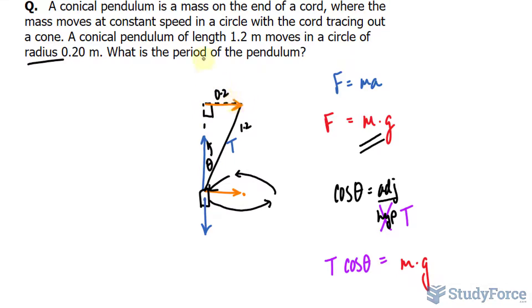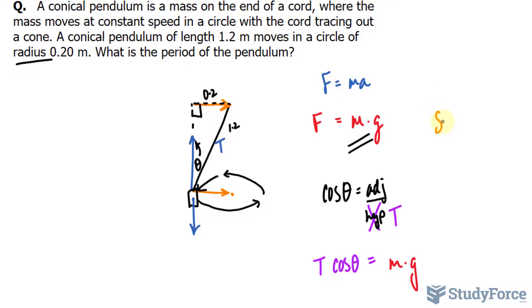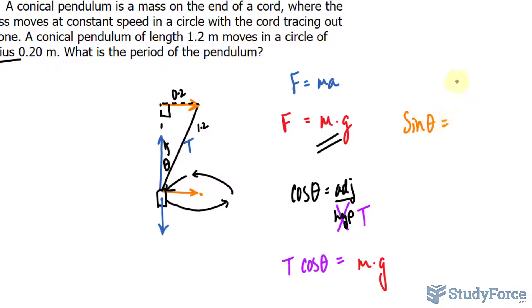So we need to find out the magnitude of the vector that is the horizontal component of T. And that can be represented using sine. Remember sine is a representation of opposite to the hypotenuse. And I'll explain why this is important in a moment.